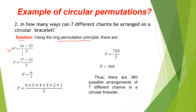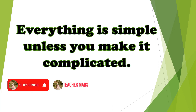So, 7 minus 1 equals 6 factorial over 2. Simplifying: P equals 6 times 5 times 4 times 3 times 2 times 1 over 2, equals 720 over 2, equals 360. Thus, there are 360 possible arrangements of 7 different charms on a circular bracelet.